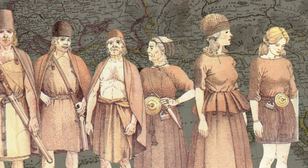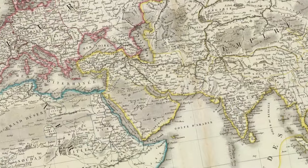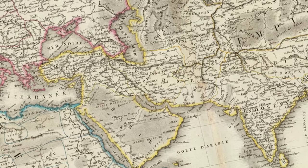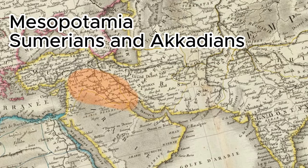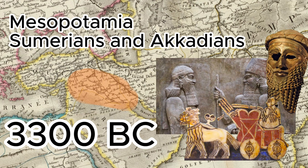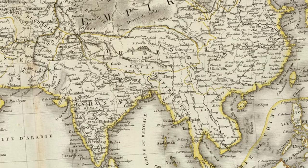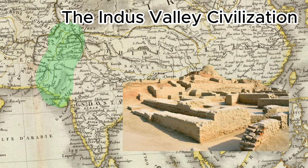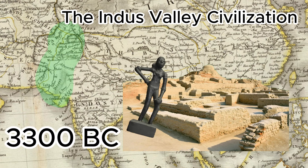The transition into the Bronze Age occurred at different times in various regions. Some of the earliest known cultures to use bronze include the Sumerians and Akkadians of Mesopotamia — the region between the Tigris and Euphrates rivers — who were using bronze by around 3300 BCE, crafting bronze tools, weapons, and ceremonial objects. The Indus Valley Civilization, in what is now modern-day Pakistan and northwest India, also entered the Bronze Age around 3300 BCE, producing bronze figurines, tools, and ornaments.